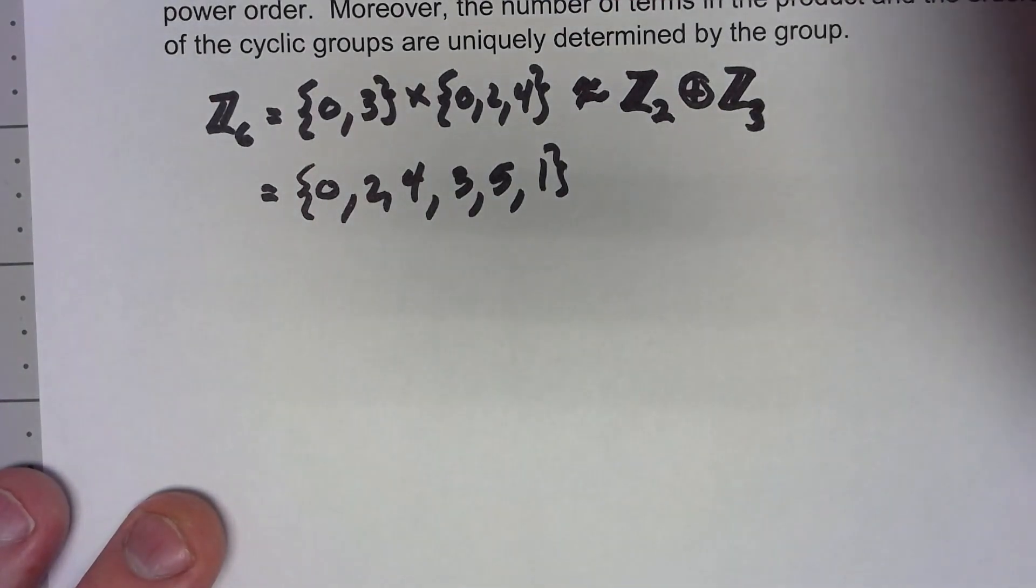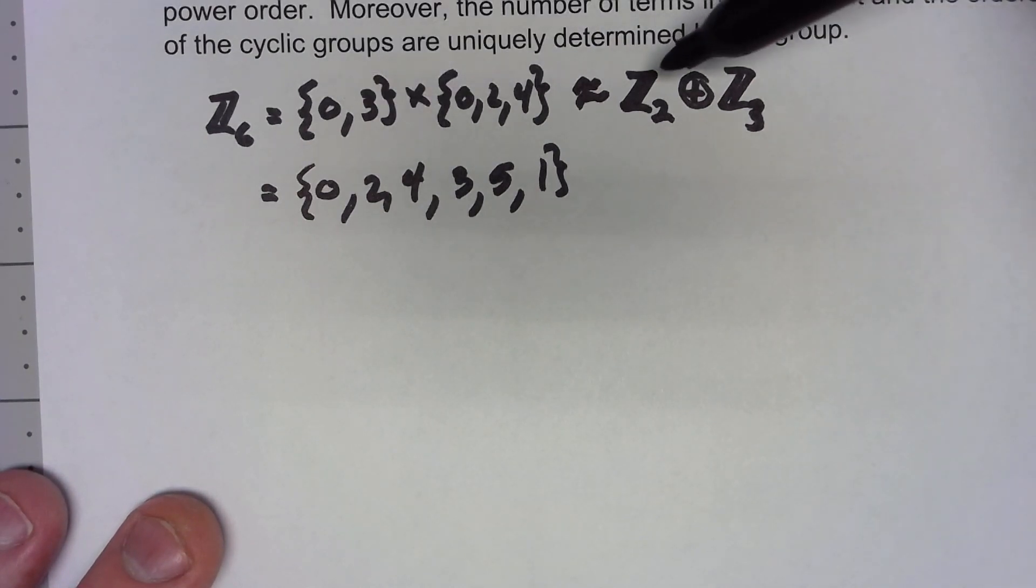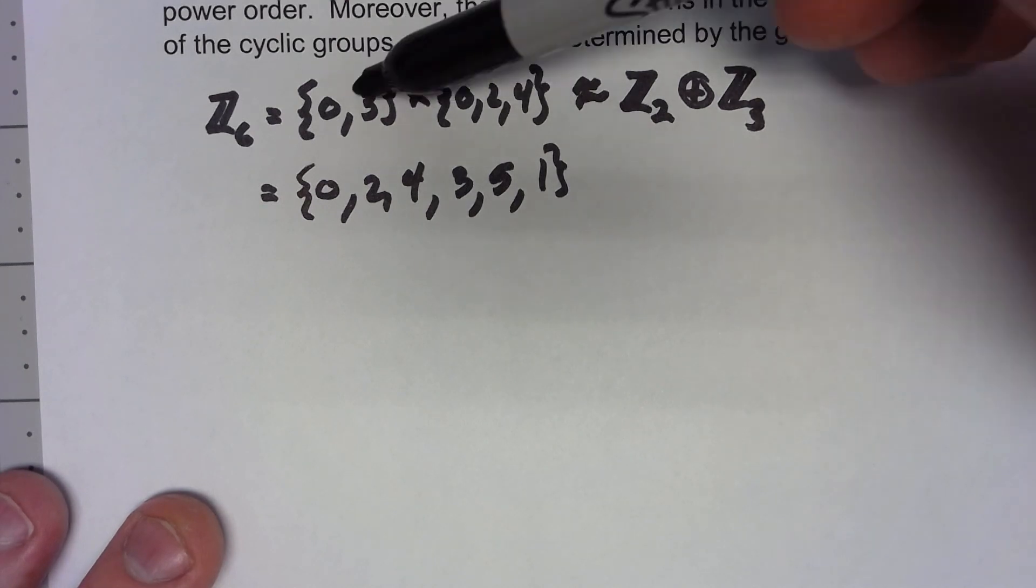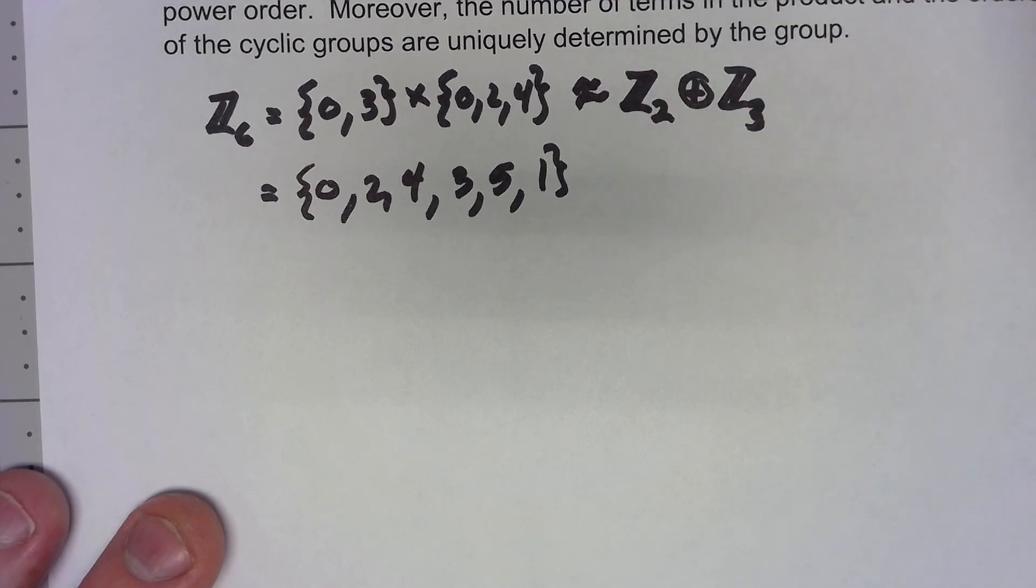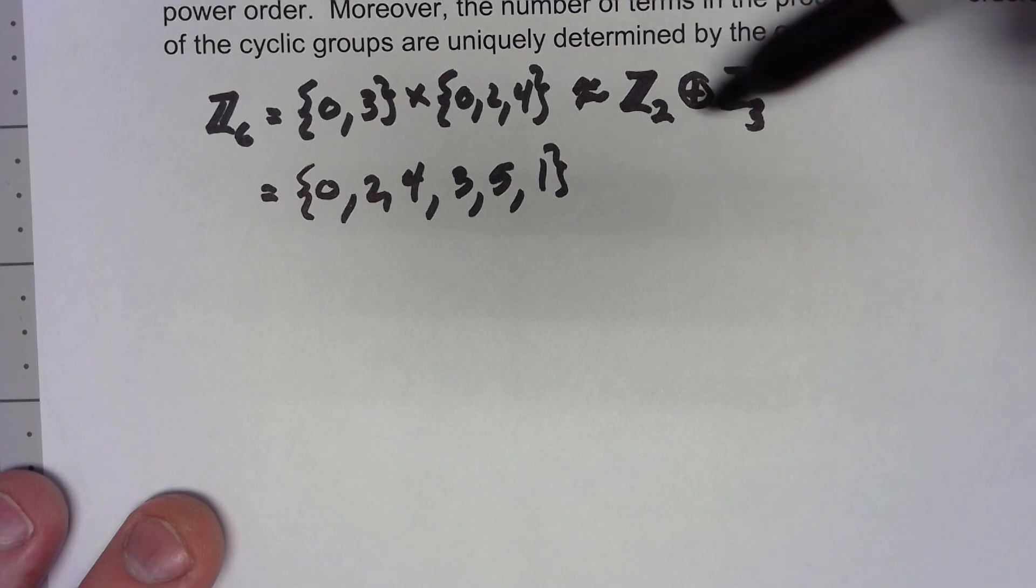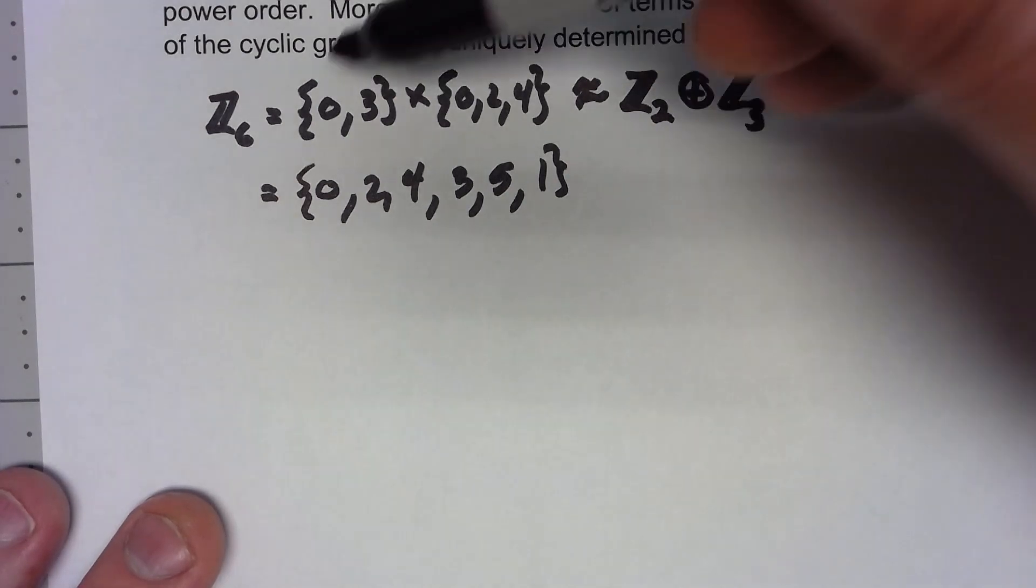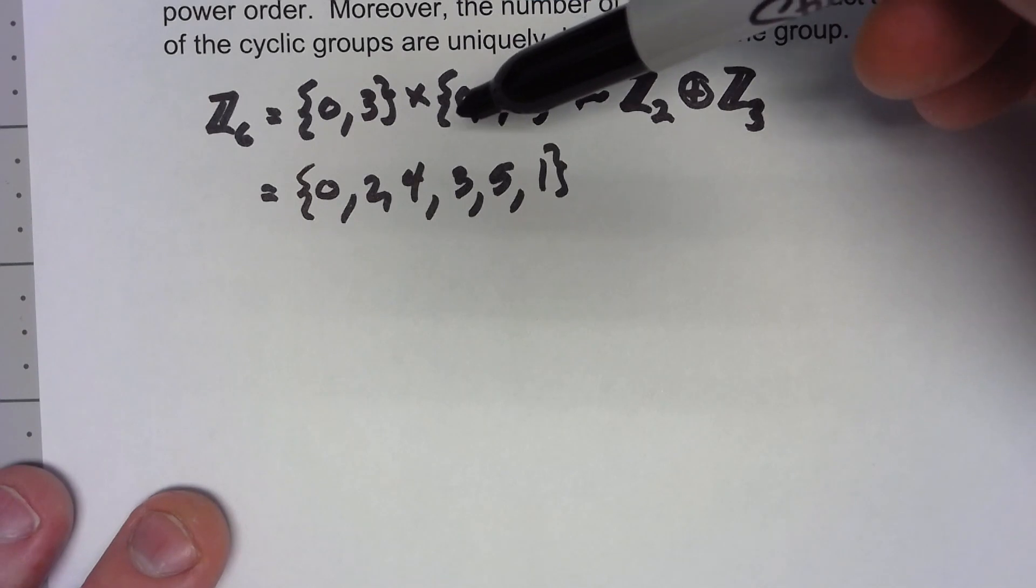Now we've done this isomorphism before, and the big thing is that even though this theorem is really talking about inner direct products, it tends to be more convenient to write it as the external direct product. It's easier to break it down into these classifications. So we're more often going to be writing it using an external direct product even though there's always actually an internal direct product going on.